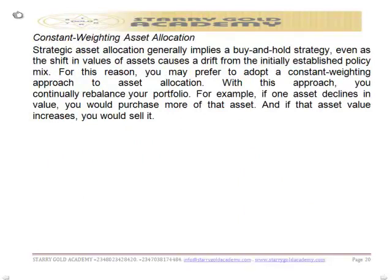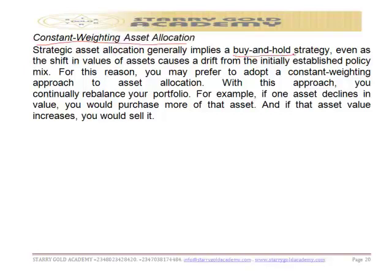The next one is constant weighting asset allocation. Strategic asset allocation generally implies a buy-and-hold strategy. Even with shifts in the values of assets, this causes a drift from the initially established policy mix. For these reasons, you may prefer to adopt a constant weighting approach to asset allocation. With this approach, you continually rebalance your portfolio.